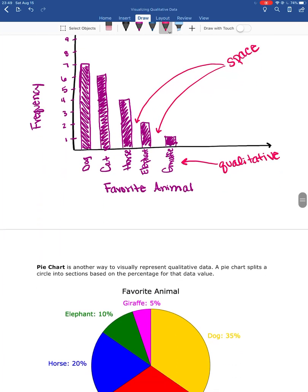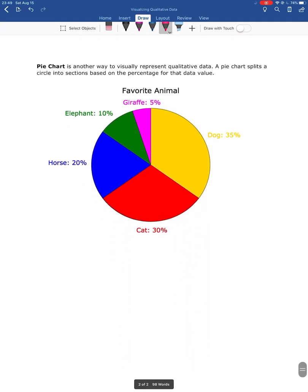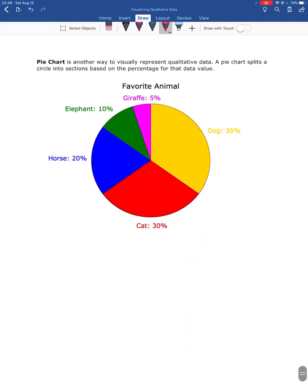And then another way that we can visualize data—we're not gonna ever draw these, but we might see some of them and we're gonna want to know how to read them—so this is a pie chart. What a pie chart does is it takes a circle and it splits it into sections based on the percentage for that value. So when we're looking at this, we have our dog section here in yellow, 35 percent, so that takes up the largest piece of the pie chart. And then the sections get smaller for each animal because each animal was seen less frequently than the dog. And that's a pie chart.